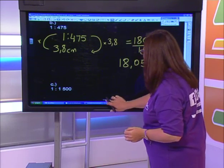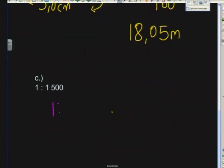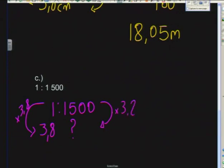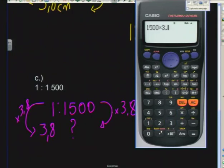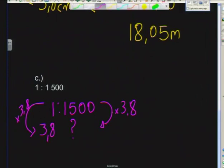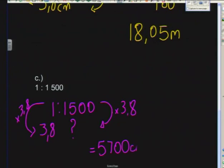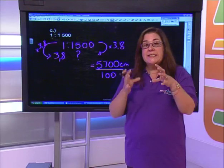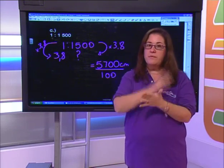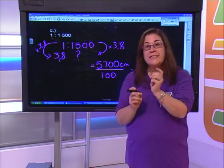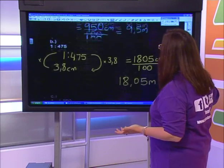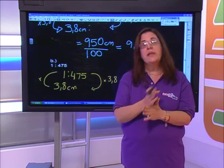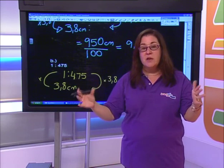For the third part, with a scale of 1 to 1500 and 3.8 centimeters on the plan: 1500 × 3.8 = 5700 centimeters, divided by 100 gives 57 meters. You can see that as the scale number gets bigger, the distances are bigger. This 3.8 centimeters went from 9.5 meters at scale 1:250, to 57 meters at scale 1:1500 - the bigger the scale number, the bigger the distances but the less detail we can get.